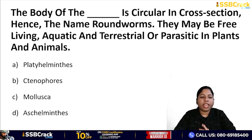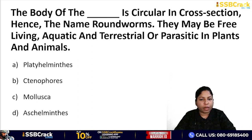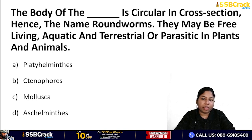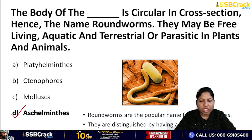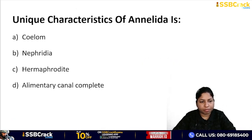Next question: the body of the worm is circular in cross-section, hence called roundworms. They may be free-living, aquatic, terrestrial, or parasitic in plants and animals. A distinctive feature has been given — roundworms. The correct answer is Aschelminthes. Roundworms are the popular name for Aschelminthes, and they have a pseudocoelome — a false body cavity.